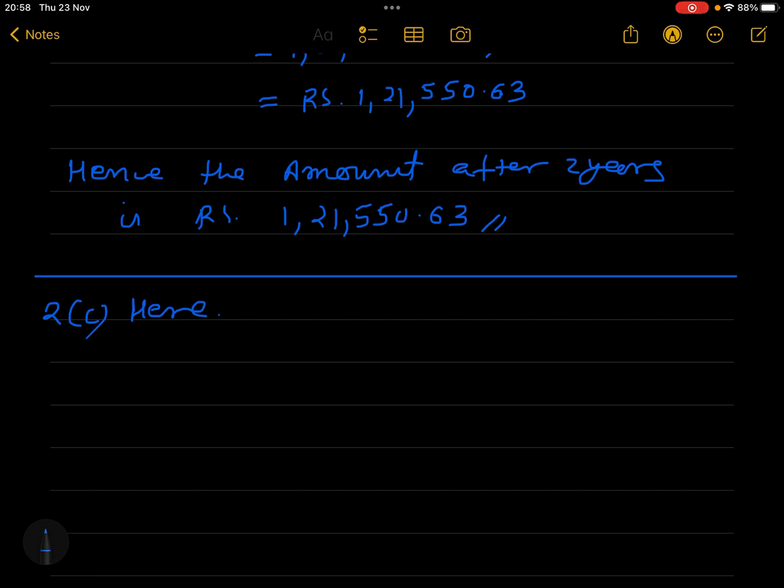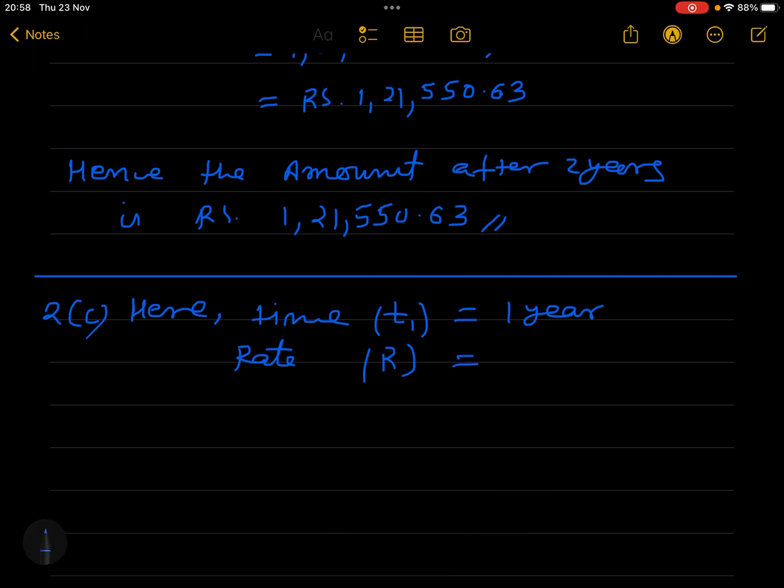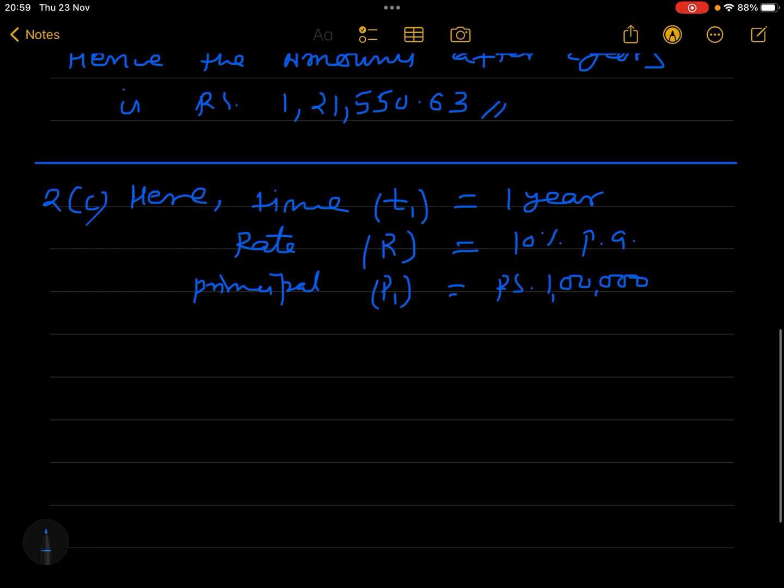Now let us do this in the same way. This is a higher ability type question. Here, principle is the same. Time is changed now. Time T1, let us say, is equal to one year only. Rate also same: R is equal to 10 percent per annum. Principle P is equal to rupees 1,00,000.